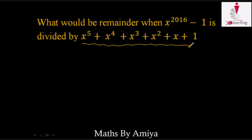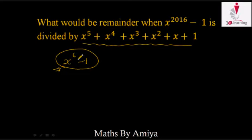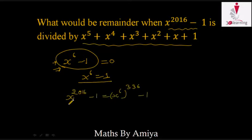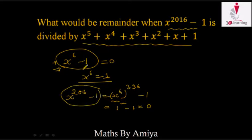First, analyze our divisor function: it is 1 + x + x^2 + x^3 + x^4 + x^5, so we can say this is a factor of x^6 - 1. Now check: what would be the remainder when a polynomial bigger than — or a multiple of — our divisor divides the dividend function? Assume x^6 - 1 = 0 for finding the remainder, which is concept number 3. By this, x^6 = 1. We know x^2016 - 1 = (x^6)^336 - 1. Since x^6 = 1, this becomes 1 raised to some power minus 1, which is 0.